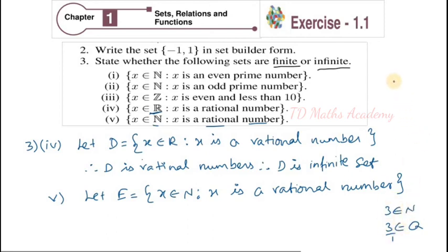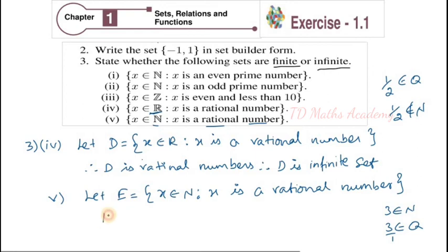But one rational number is added: for example, 1/2 is element of Q, but 1/2 is not element of natural numbers. So every natural number is a rational number, but not every rational number is a natural number. Here both conditions are satisfied for natural numbers. So E equals the set of natural numbers: 1, 2, 3, dot dot dot. Every natural number is a rational number.